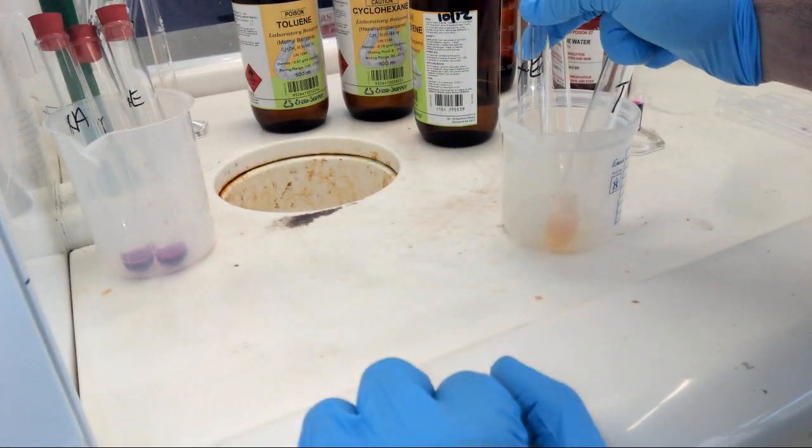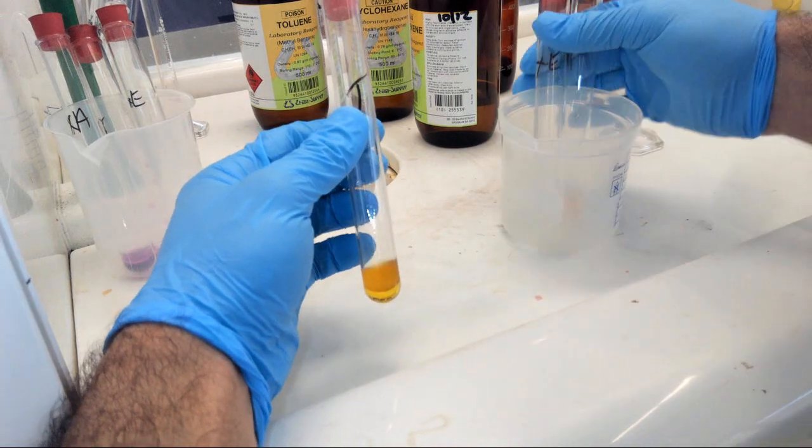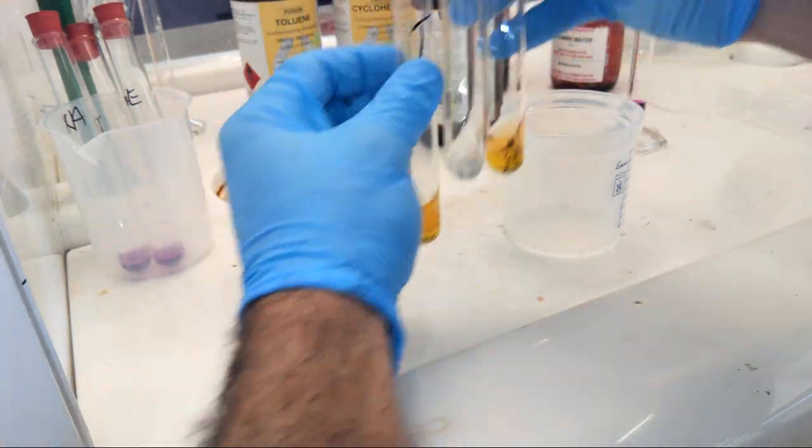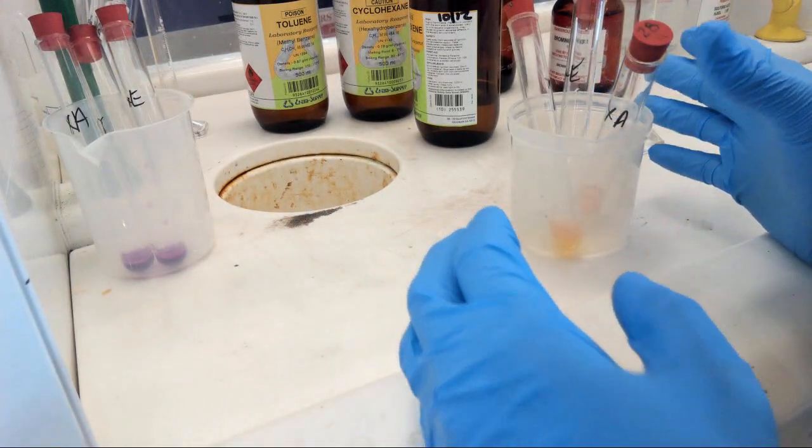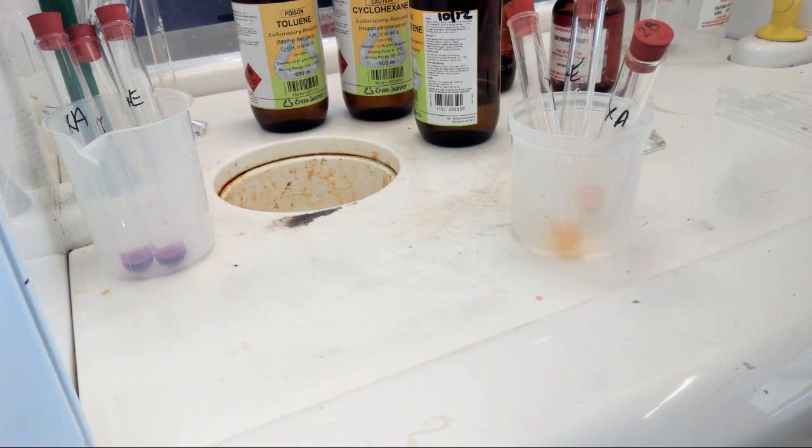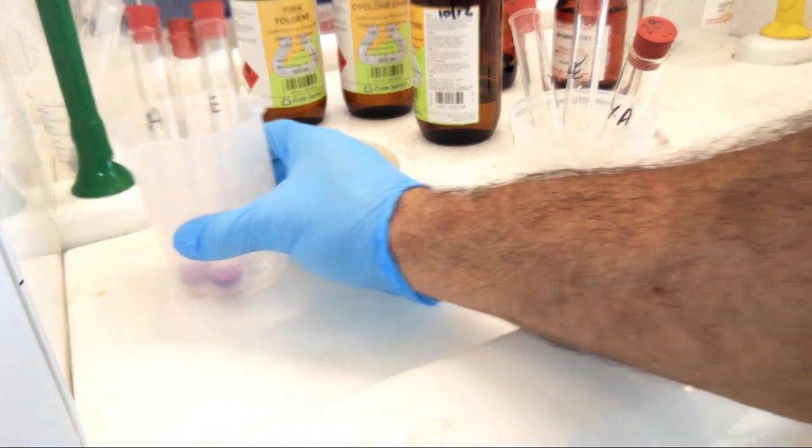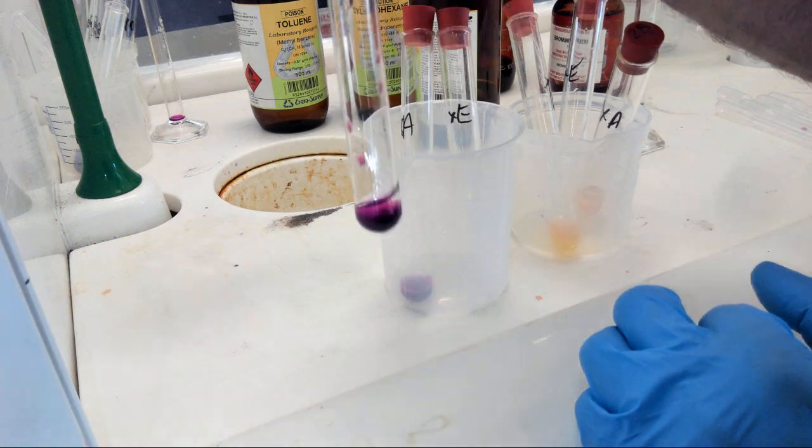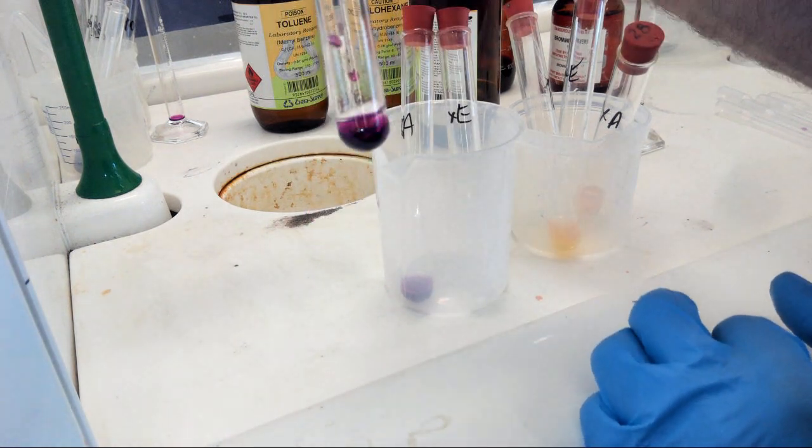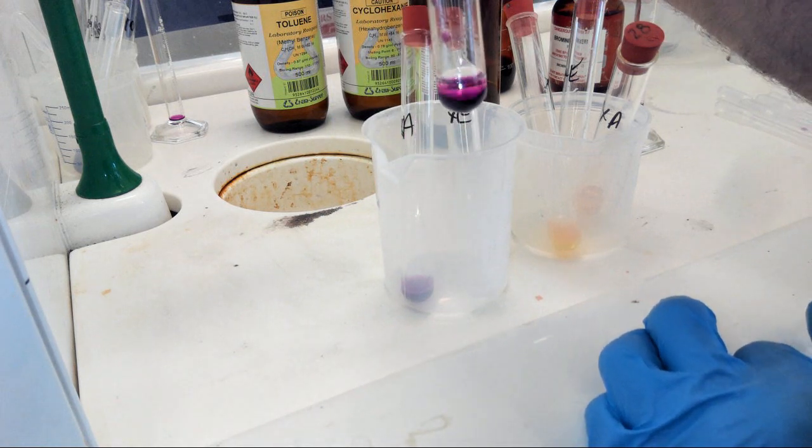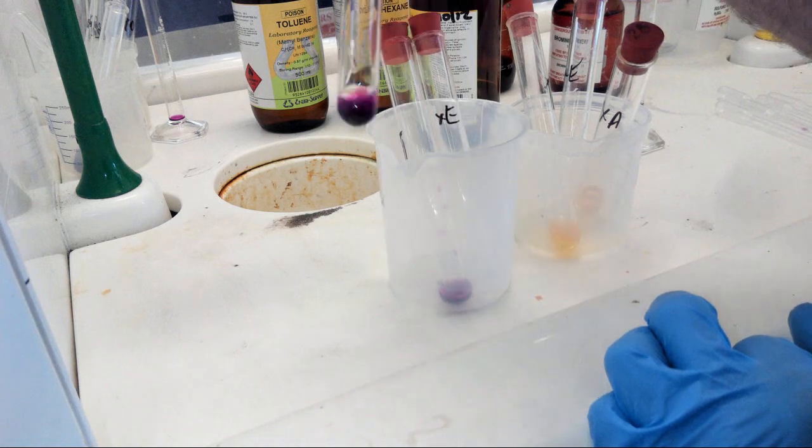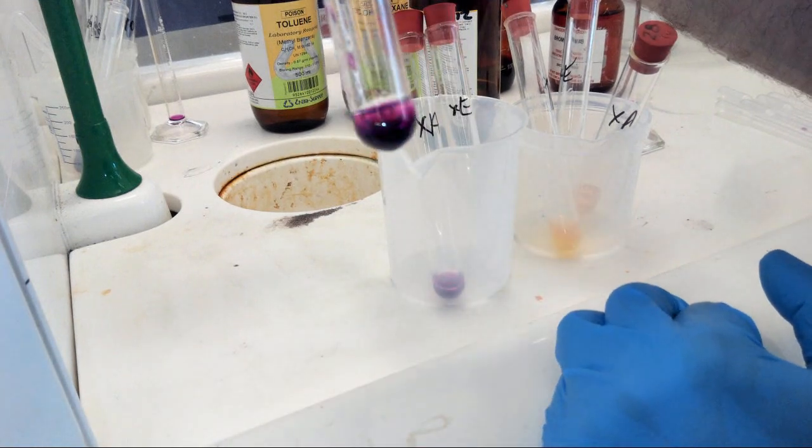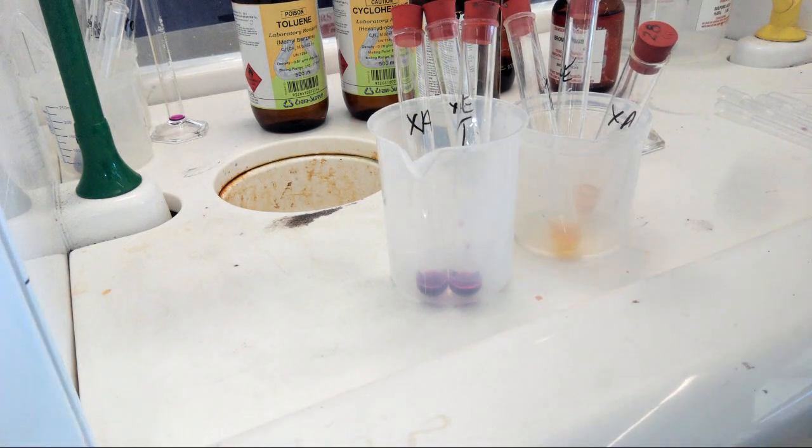Now I'm going to have a look at the other ones. It's been about five minutes. Cyclohexene, completely see-through. Toluene, still pretty much two layers, one clear, one not. Cyclohexane, again pretty similar to the toluene. Good luck with your write-up.